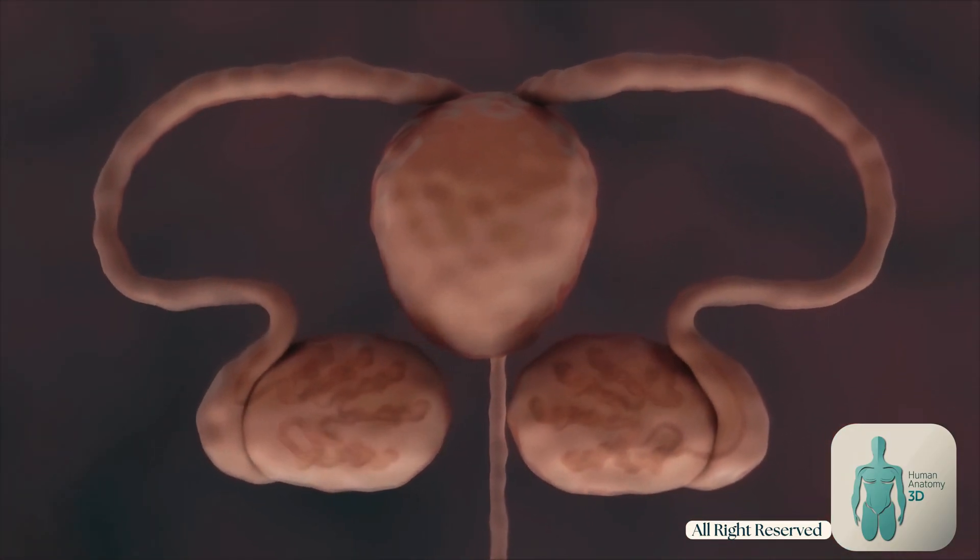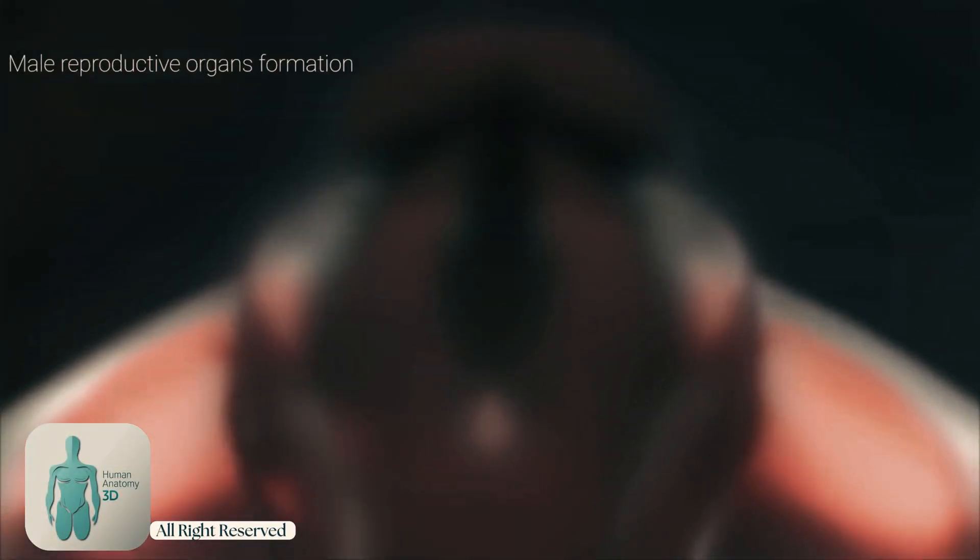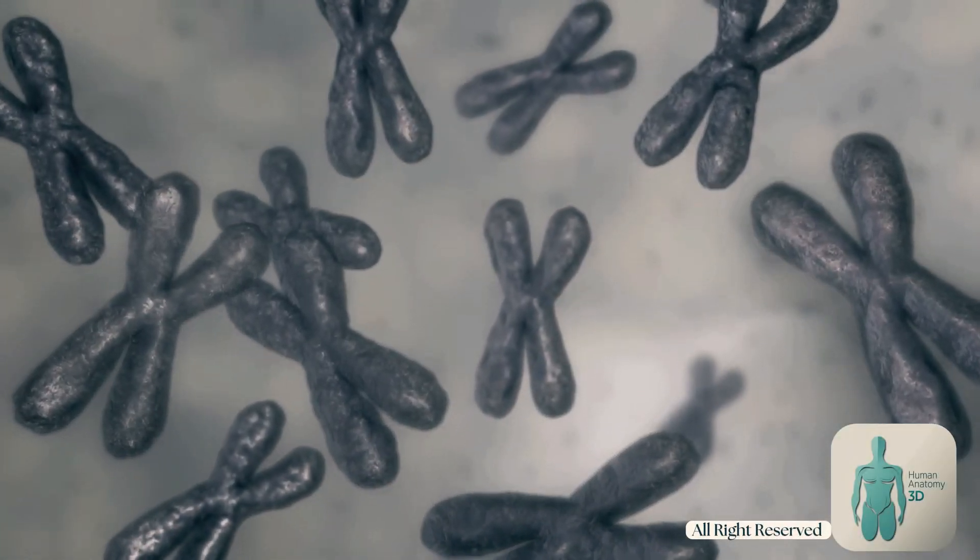Indicating a male, the undifferentiated gonadal tissue develops into testes. The testes then release hormones including testosterone which directs the development of male reproductive organs.